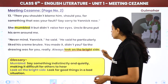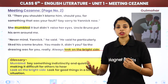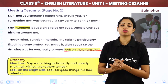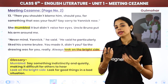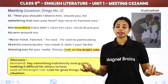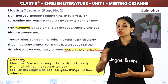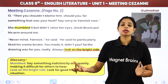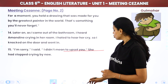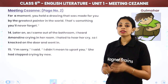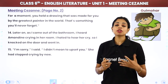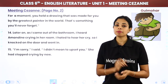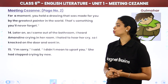'Always look on the bright side' means that even in a bad situation, try to find something good. For example, if you met with an accident, the bright side is that you could have been hurt worse but you are fine. Uncle Bruno said: 'For a moment, you held a drawing made for you by the greatest painter in the world — that's something you will never forget.'